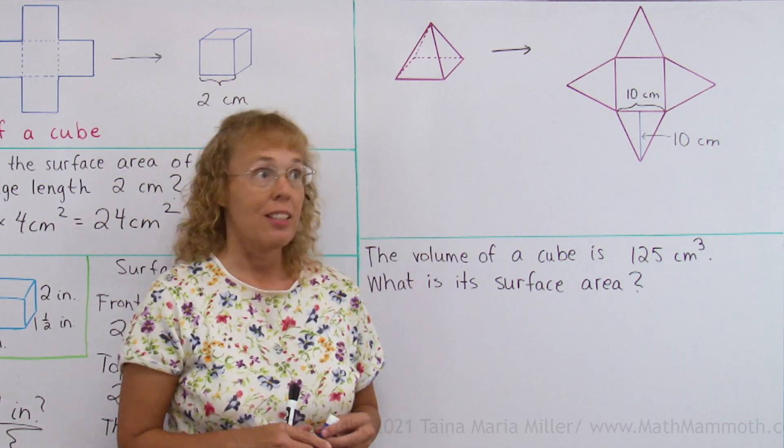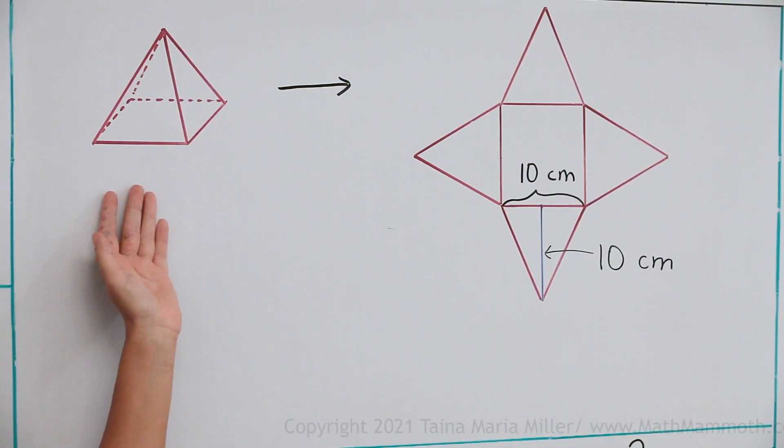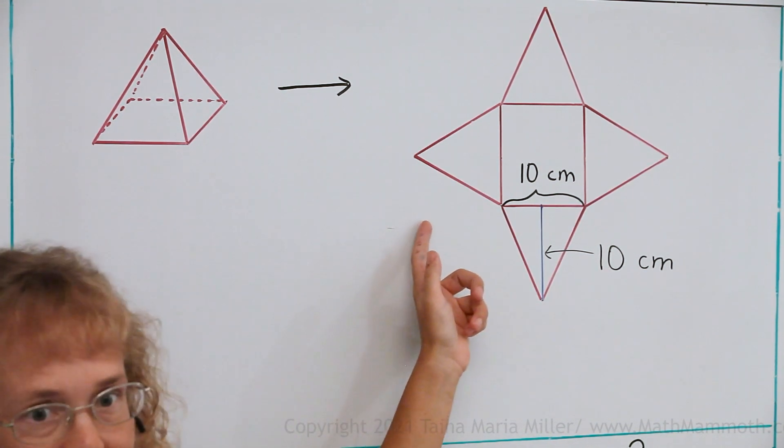Next, we're going to figure out the surface area for this pyramid. It's a square pyramid, which means that the bottom here is a square.